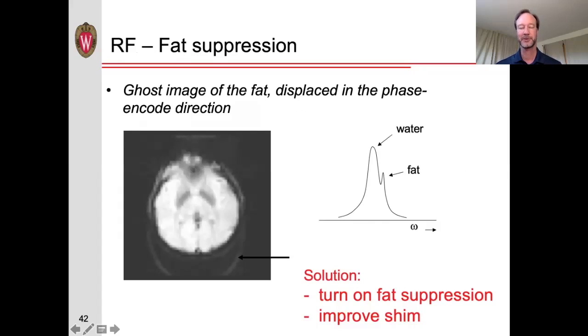Now, another solution to try to fix that would be, of course, turning on the fat suppression if it wasn't on to begin with. But also, this fat suppression loses its effectiveness if you have magnetic field non-uniformities. That is, if the fat peak isn't exactly where you expect it to be in terms of its resonant frequency, the fat suppression is not going to be as effective. And so improving the shim, that is, improving the uniformity of the magnetic field, can help with that.